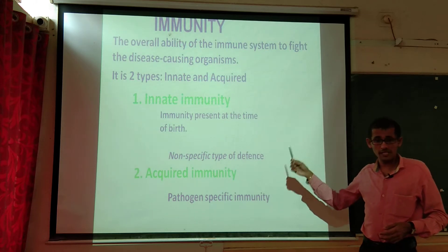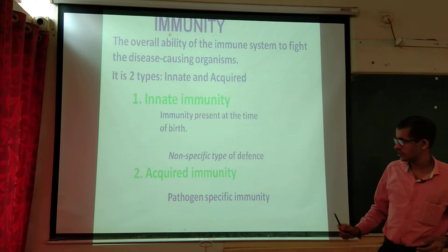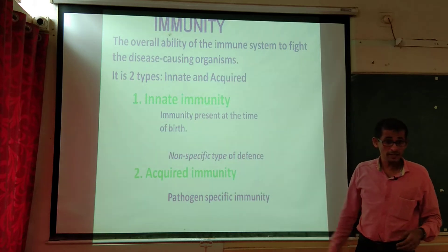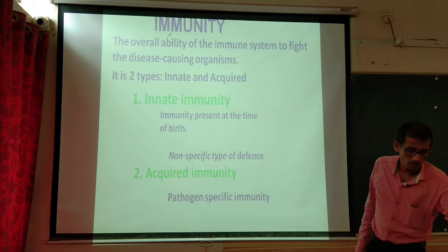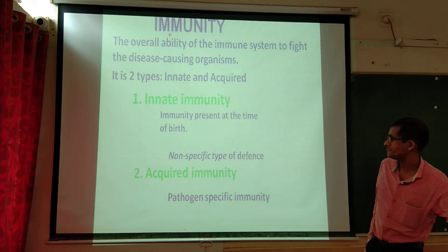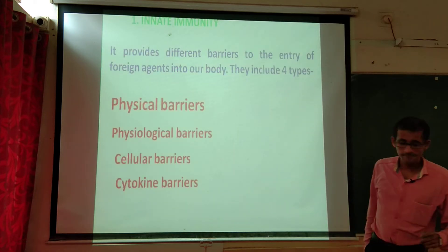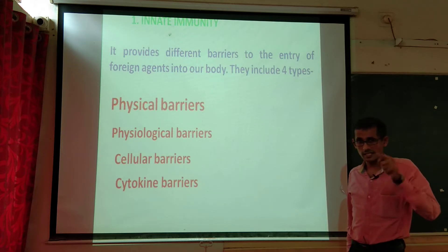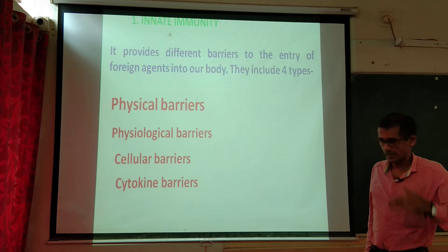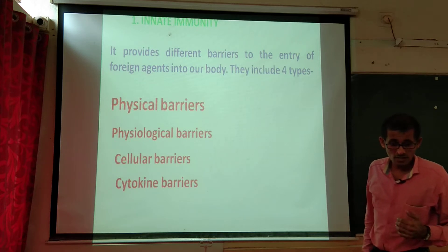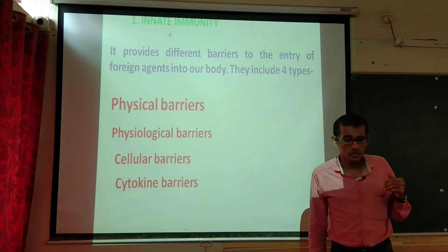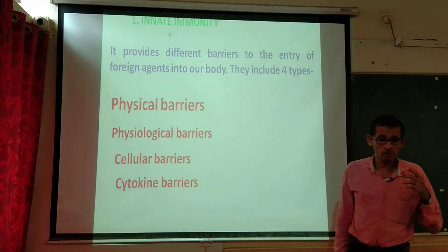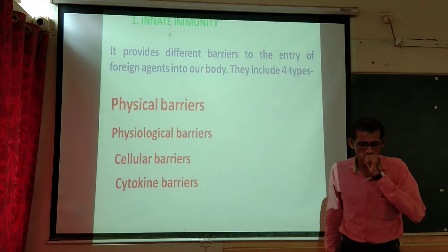So there are two types of immunity: innate and acquired. One is present by birth and is non-specific. The other is acquired after birth and is pathogen-specific. Innate immunity provides different barriers to prevent the entry of foreign agents into our body.